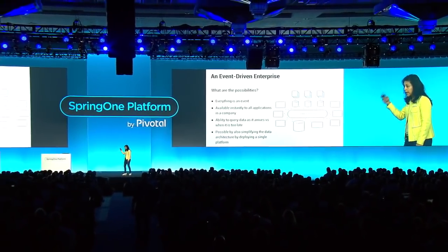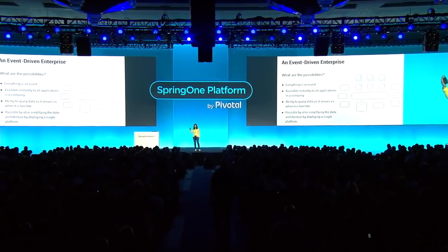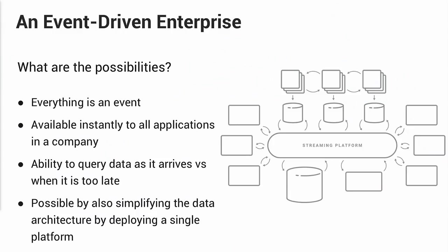What does an event-driven enterprise look like as an end state? The possibilities are immense. Everything happening in your business is an event, available instantly to all applications that need to process it. You have the ability to query data and respond to it as it arrives rather than when it's too late. And all this is possible while simplifying your data architecture — deploying a single platform that replaces a mesh of different ETL tools by relying on a central streaming platform.